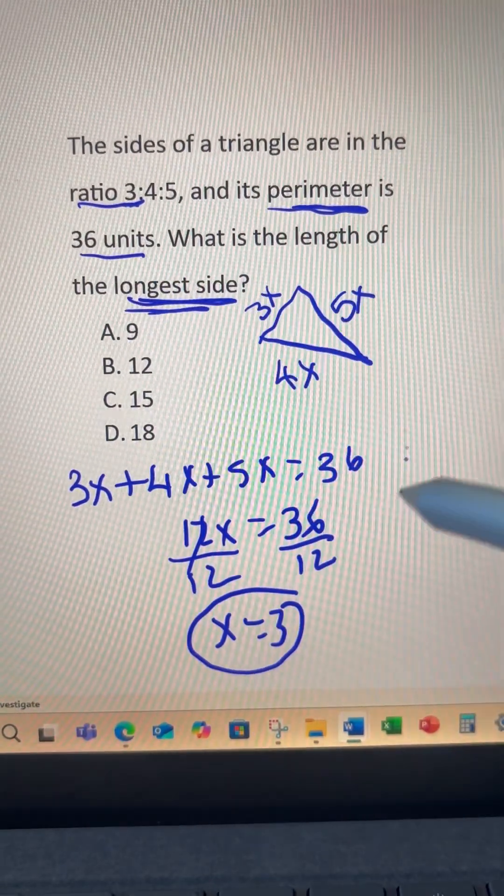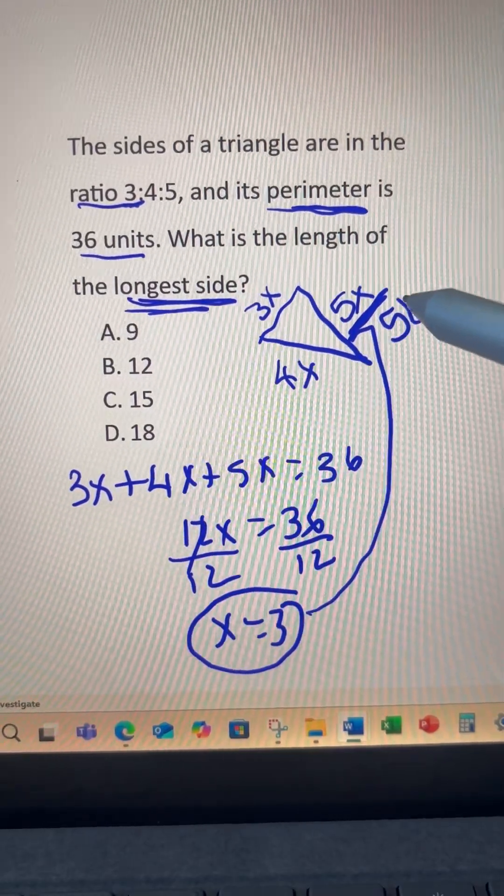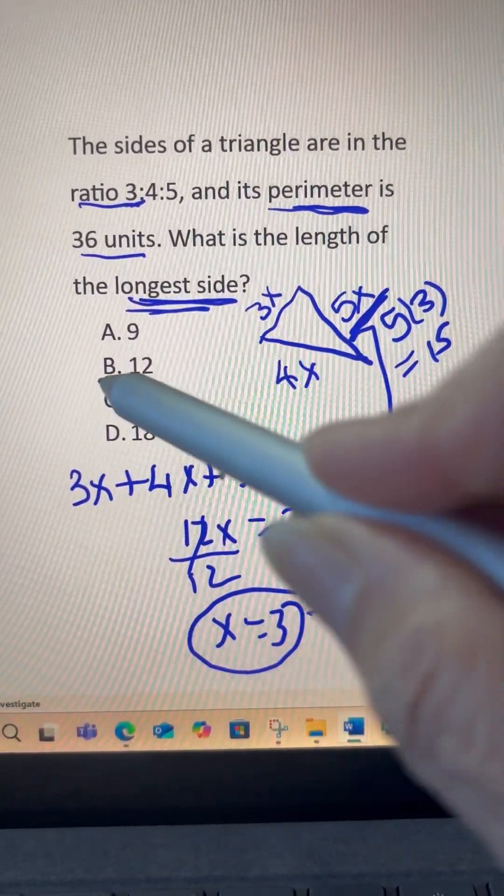Now we are looking for the longest side. So we can plug in for the longest side. 5 times 3 is 15. Answer choice C.